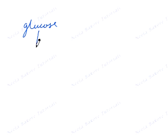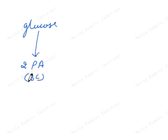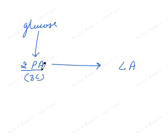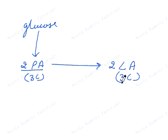Lactate fermentation is again anaerobic. Glucose is broken down into two molecules of pyruvic acid. Each pyruvic acid, as we said, is a three-carbon compound, and it gets converted into lactic acid. So from two pyruvic acids, we get two lactic acid molecules. Each lactic acid molecule is again a three-carbon compound.